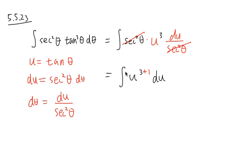3 plus 1 is equal to 4. And then I'm going to divide by 4, which is the same as multiply by a fourth. So the result of this integral, after you do the power rule backwards, you get 1 fourth u to the fourth power.